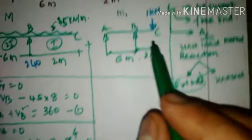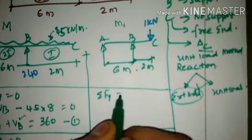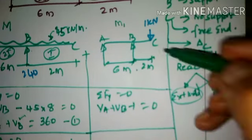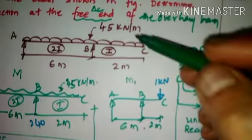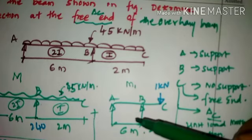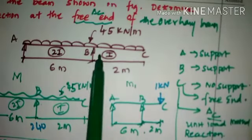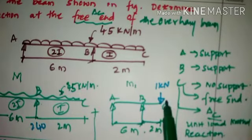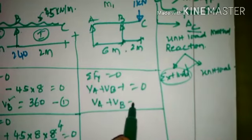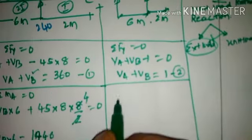Now finding reaction components due to the 1 kN unit load. Applying summation Fy = 0: VA + VB − 1 = 0, so VA + VB = 1. This is equation 2. The unit load is applied downward at C, consistent with the direction of the UDL deflection assumption.